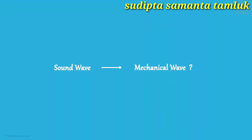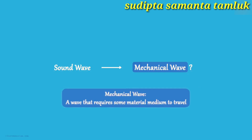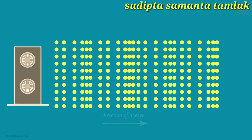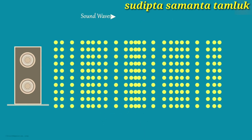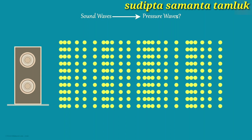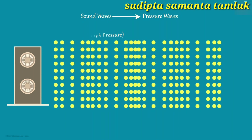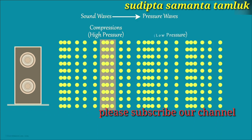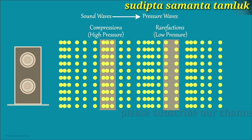Is the sound wave a mechanical wave? A mechanical wave is a wave that requires a material medium to travel, and since a sound wave also requires a medium, yes, it is a mechanical wave. Sound waves are also called pressure waves because they consist of a repeating pattern of high pressure regions called compressions and low pressure regions called rarefactions travelling through the medium.